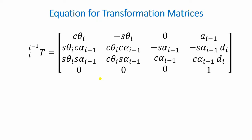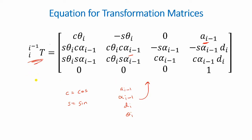When creating transformation matrices from the DH table, this is the equation we will be using. In this equation, C stands for cosine and S stands for sine values. The variables used are the same link joint parameters from the DH table: a(i-1), alpha(i-1), d(i), and theta(i). All we need to do is substitute these values into this equation to get our transformation matrix.